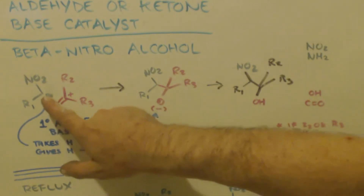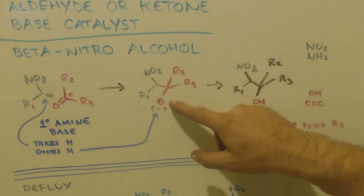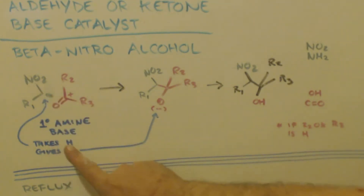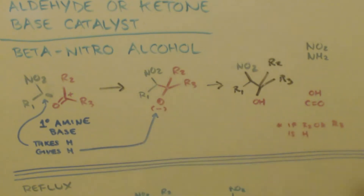That negative charge jumps up onto the oxygen. Remember, this amine base is a catalyst, meaning whatever it does it reverses later so it can be reused. It gave up a hydrogen, so later it gives a hydrogen back, returning to what it used to be so it can go take another hydrogen again.